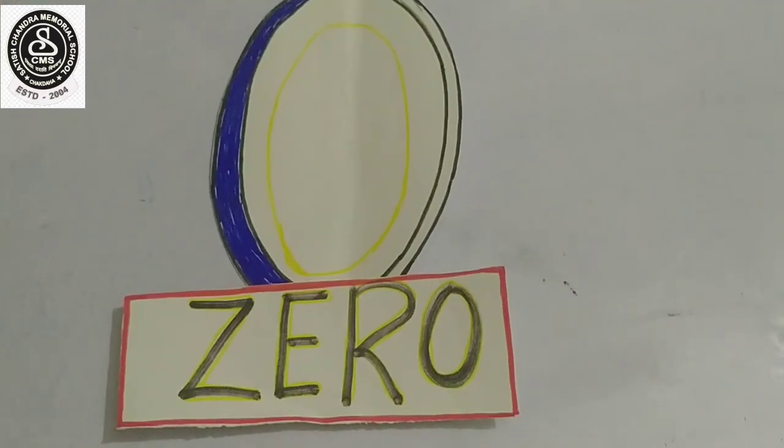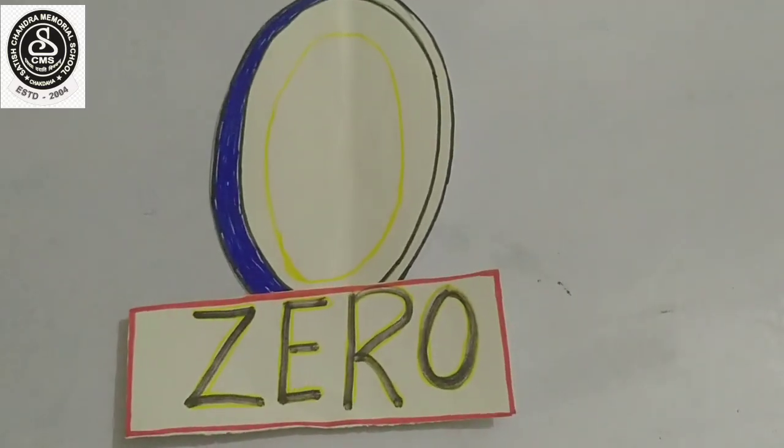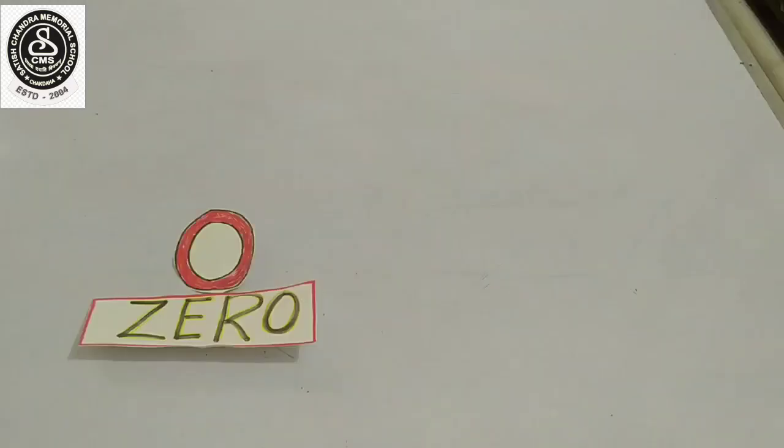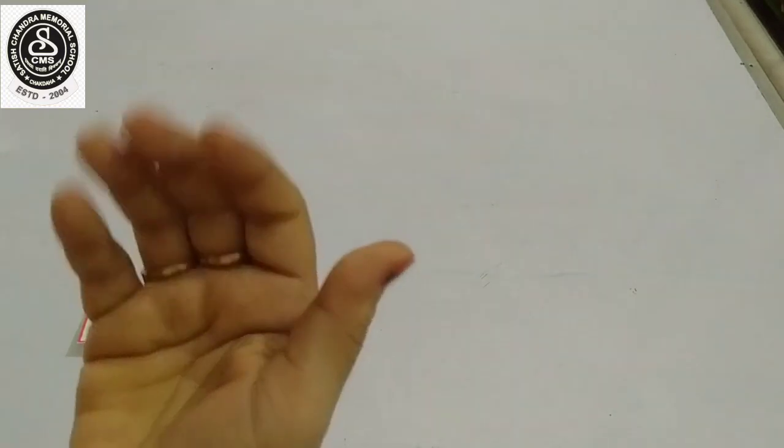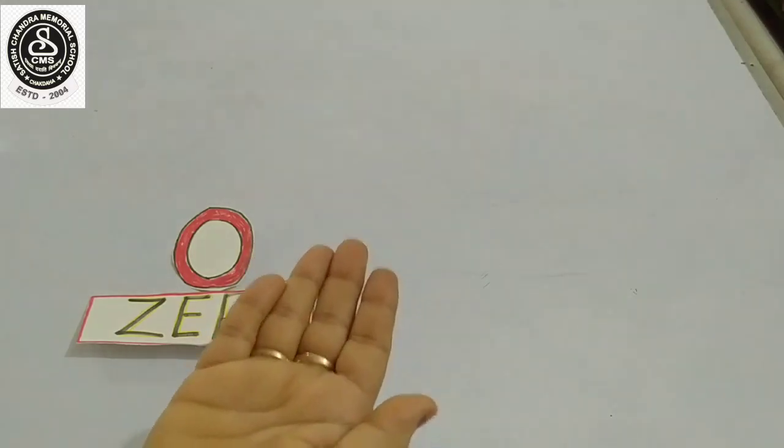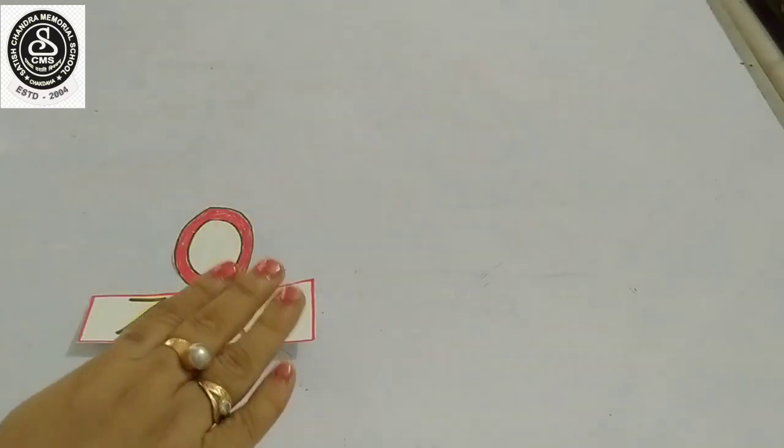My dear students, today I am going to teach you the concept of zero. So let's begin. What does zero mean? Can you tell me? Zero shows no objects. If I am saying zero toffees in my hand, that means I have no toffee. Zero means nothing.